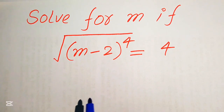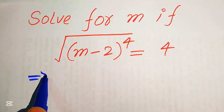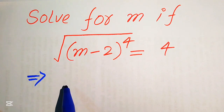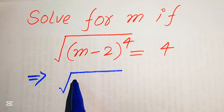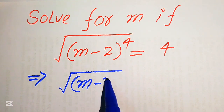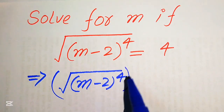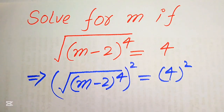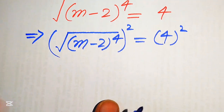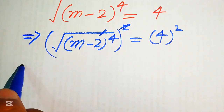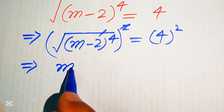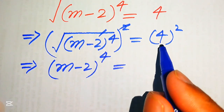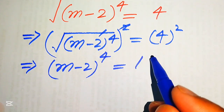The very first step is to eliminate the square root sign on the left hand side. In order to eliminate it, we square both sides. This removes the square root, and we obtain (m minus 2) to the power of 4 equals 4 squared, which equals 16.